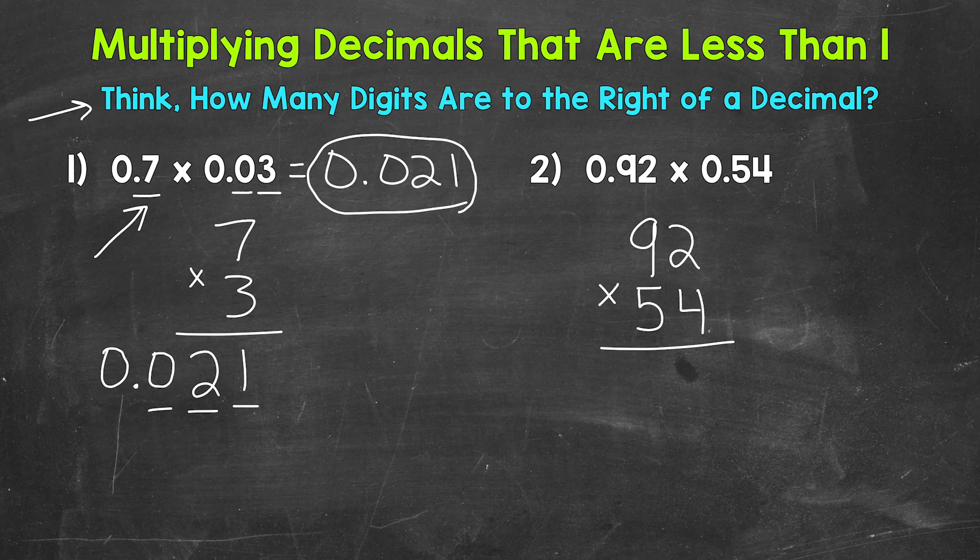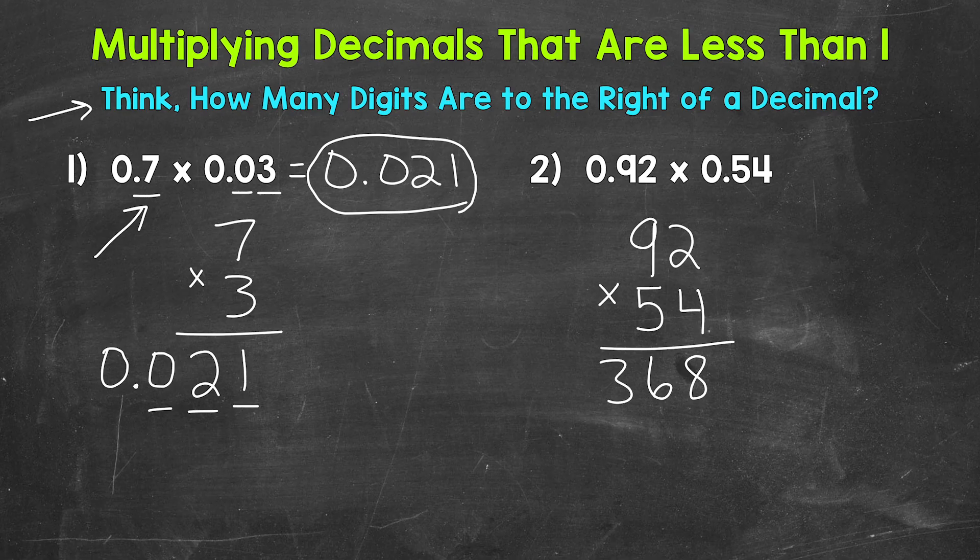92 times 54. Let's multiply, starting with 4 times 2, which is 8. And then 4 times 9, which is 36.